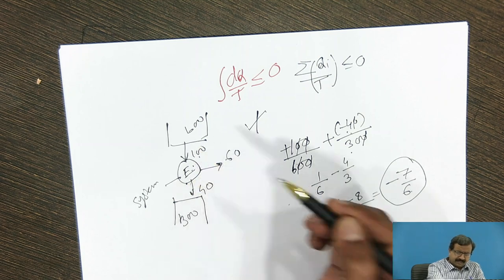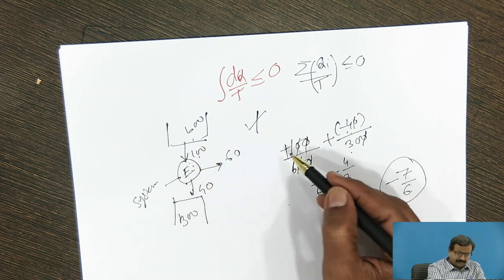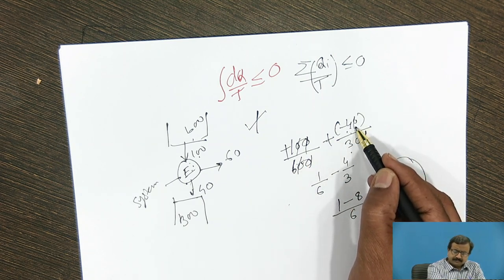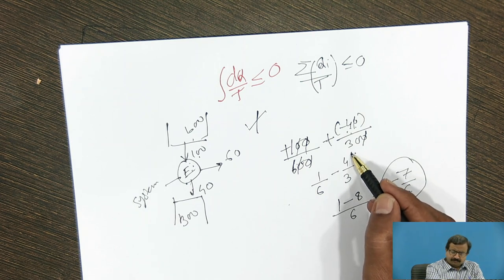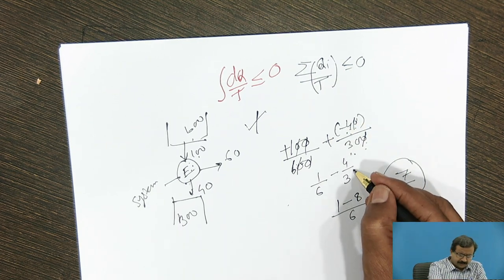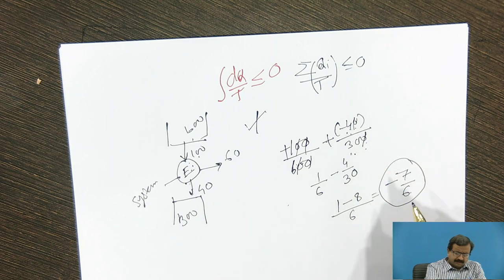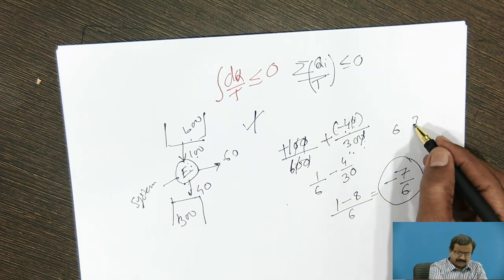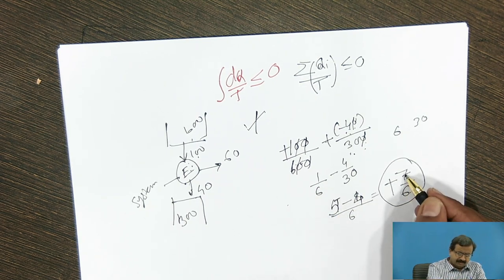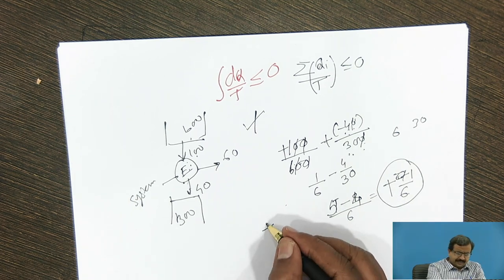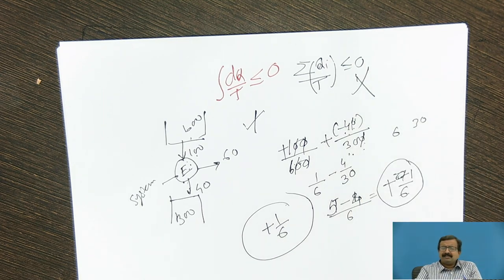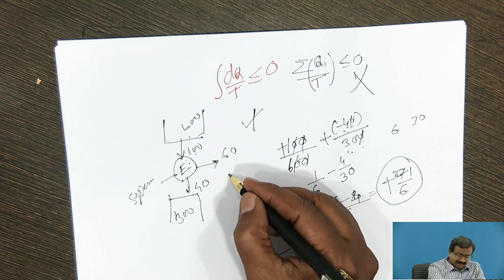Now if I take this as a system, heat supplied is 100 at what temperature? 600 Kelvin. Plus heat rejected is minus 40 at what temperature? 300. So I can get this particular 4 by 30. So I will get 4 by 30. Then my calculation will become 6. So I have to multiply here by 5. And this is 4. So my answer will be 1 by 6. So when I get answer plus 1 by 6, it says that it is not following the Clausius inequality. And hence, this engine is not feasible.